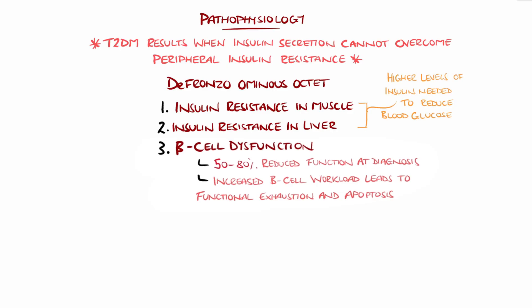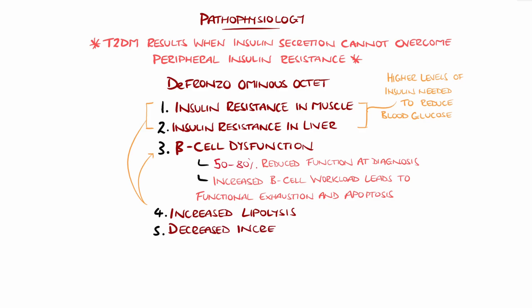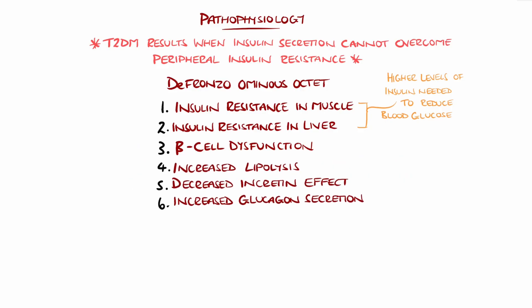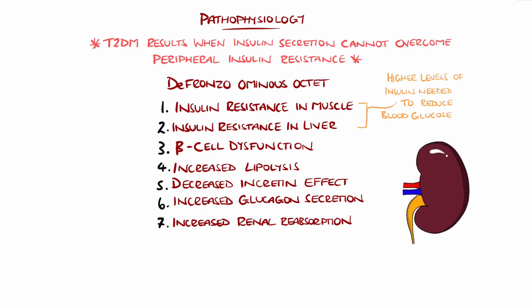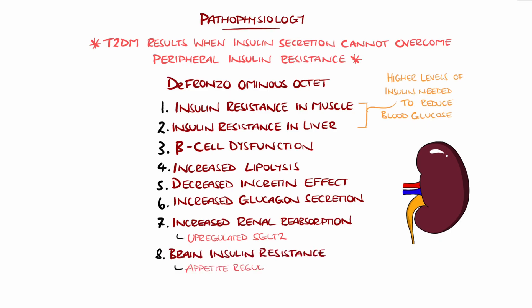Fourth is increased lipolysis, where elevated free fatty acids from adipose tissue worsen insulin resistance and beta cell dysfunction. Fifth is decreased incretin effect, where reduced GLP-1 activity diminishes insulin secretion. Sixth is increased glucagon secretion, which further increases hepatic glucose output. Seventh is increased renal glucose reabsorption, where upregulated SGLT2 transporters in the proximal tubules exacerbate hyperglycemia. The eighth of the octet is brain insulin resistance, which alters appetite regulation and systemic insulin sensitivity.